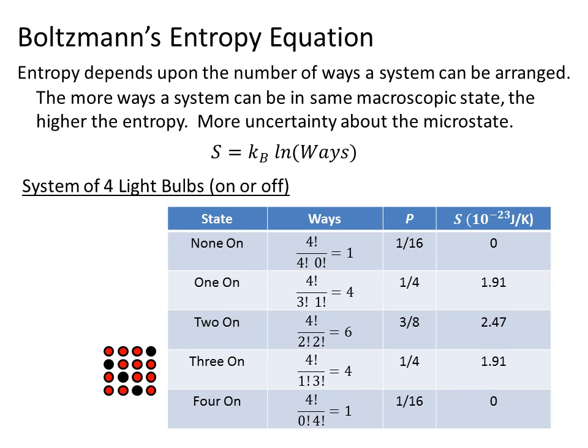3 on goes back to the situation, or similar to the situation with 1 on. There's only four ways. So it has the same entropy as with 1 on. And 4 on is the same as none on as far as the fact that there's only one way we can do this. So it also has zero entropy.